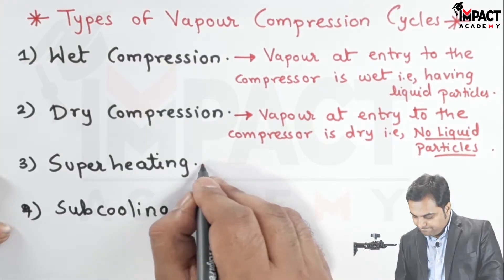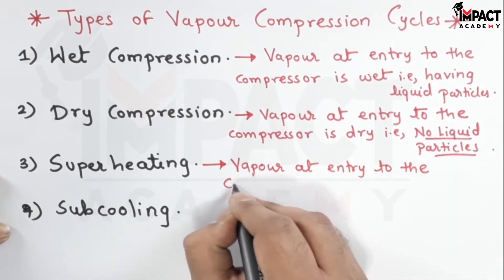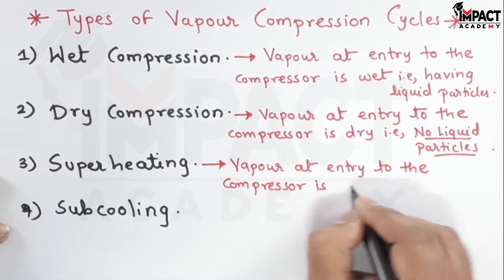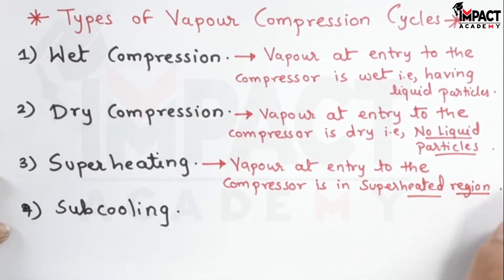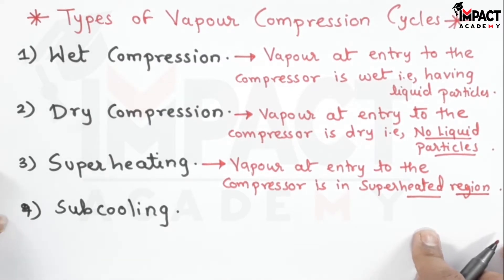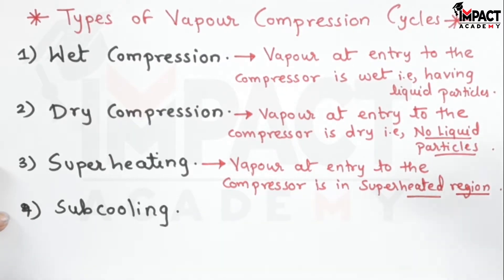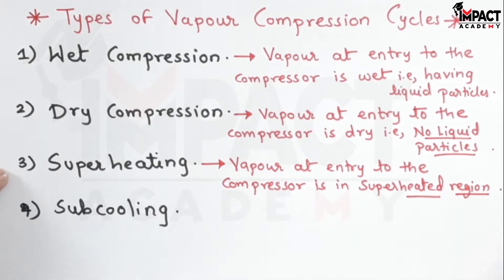Then superheating. The vapor at the entry to the compressor is in the superheated region — that is, it is ahead of the dry compression. In dry compression there are no liquid particles, but in superheating the vapor has an even higher temperature, going into the compressor at a more dry condition than dry compression. Then subcooling.